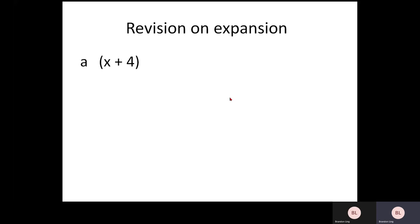Here we have one example, A multiply in the bracket X plus 4. So essentially what you can do is you need to multiply each and every one of this term to get AX plus 4A.